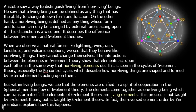When we observe all natural forces — lightning, wind, rain, light, landslides, and volcanic eruptions — we see that they behave like non-living beings. They cannot change themselves. The interactions between the elements in Five Element Theory show that elements act upon each other in the same way that non-living elements do, and they change between each other as non-living elements do. This is seen in the cycles of Five Element Theory, especially the Co-Control Cycle, which describes how non-living things are shaped and formed by external elements acting upon them.